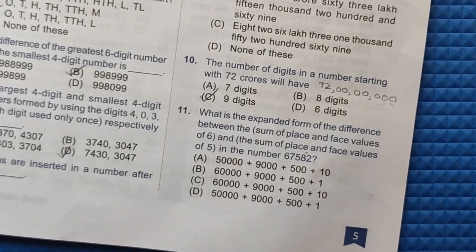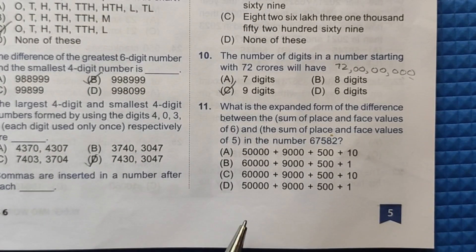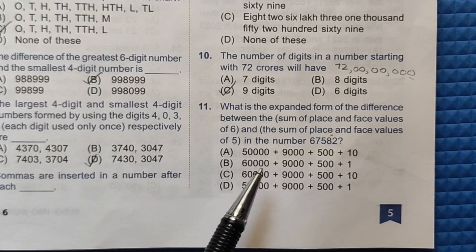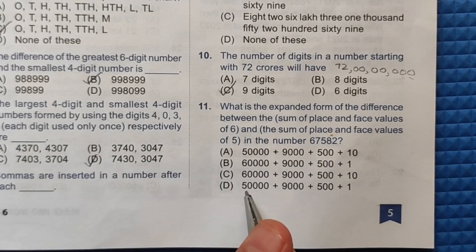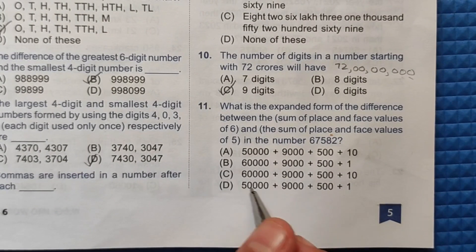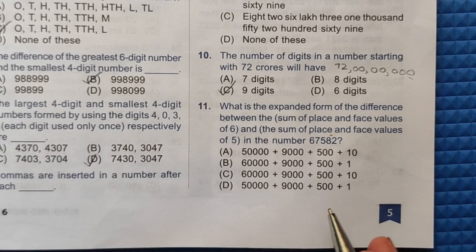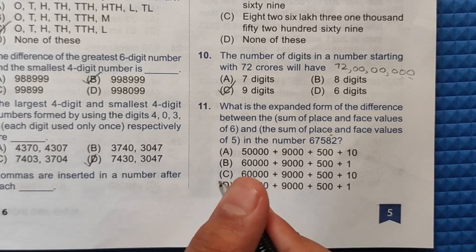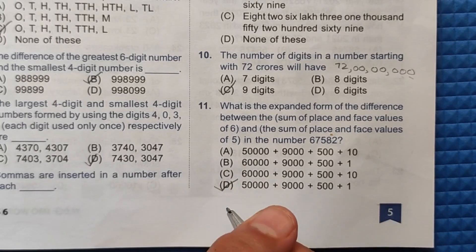Completing the subtraction of 60,006 minus 505 gives 59,501. Now we need to find the correct expanded form of 59,501, which is 50,000 plus 9,000 plus 500 plus 1. So our correct answer will be option number D.